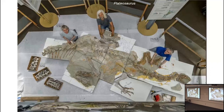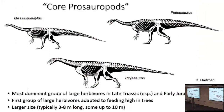Something like Plateosaurus doesn't show adaptations for omnivory — it's a herbivore — so the thumb claw is almost certainly used for something else, though what is hard to say. When we get to forms like Plateosaurus, Massospondylus, or Riojasaurus, we're in a phase called the core prosauropods. The concept of prosauropoda once appeared monophyletic in 1980s and 90s phylogenies, but it's now totally paraphyletic.